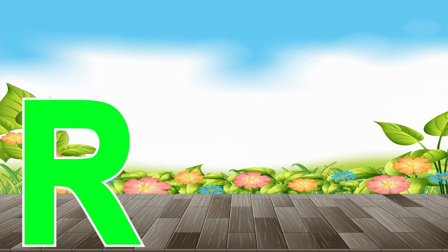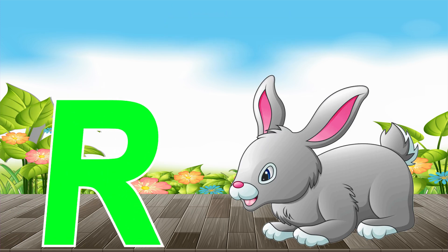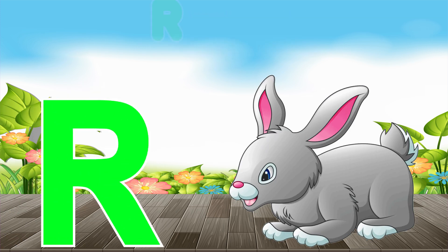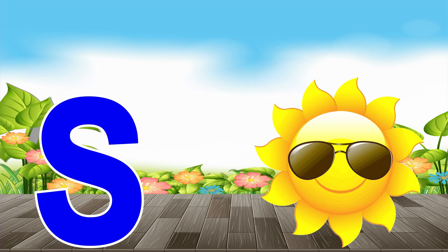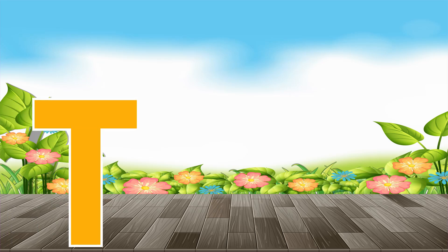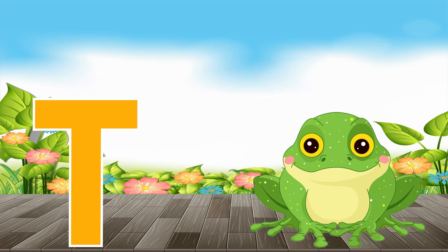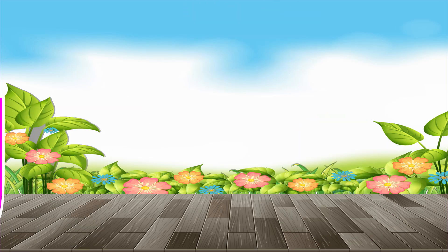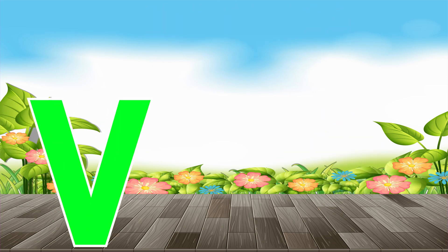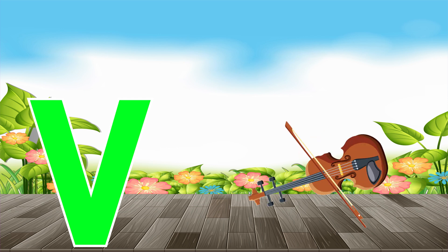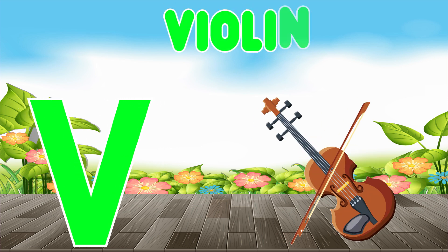R is for rabbit, r-r-rabbit. S is for sun, s-s-sun. T is for toad, t-t-toad. U is for umbrella, u-u-umbrella. V is for violin, v-v-violin.